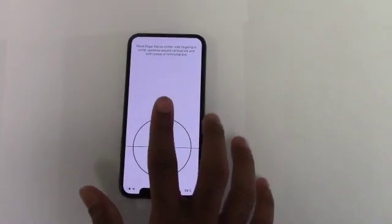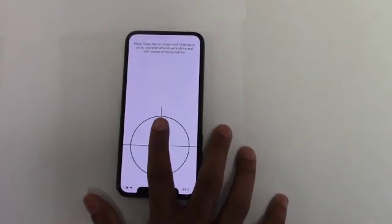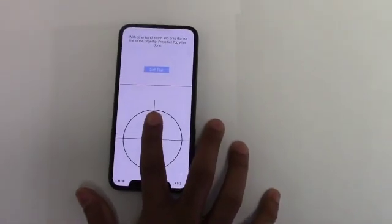The user places his index finger tip so that the crease at the top knuckle is aligned with the black horizontal line.